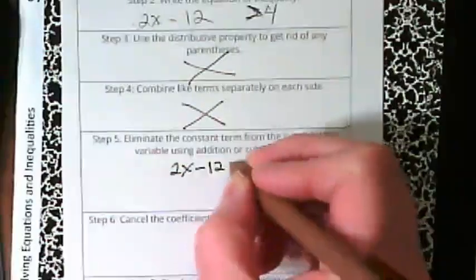And now we're in a place where we can do some eliminating, but first let's rewrite it. 2x minus 12 is greater than 4.